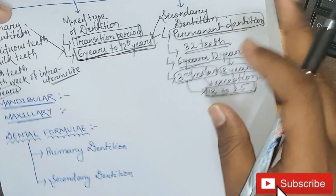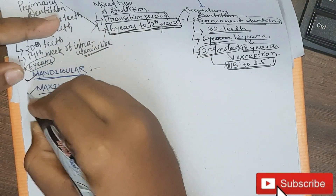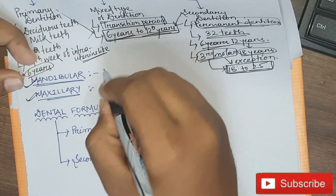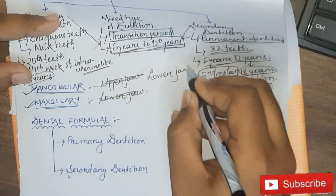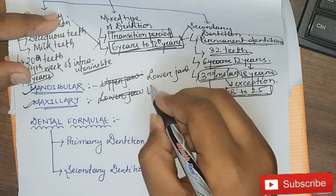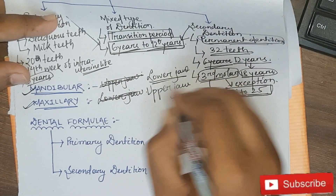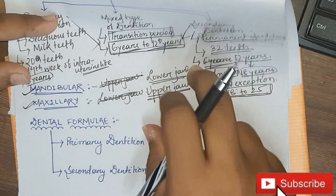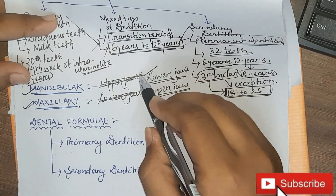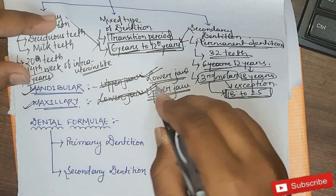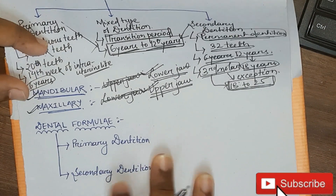Now we will see two important anatomical terms: mandibular and maxillary. Mandibular is the term that refers to the lower jaw, and maxillary refers to the upper jaw. So the mandibular region is related to the lower jaw and the maxillary region is related to the upper jaw.